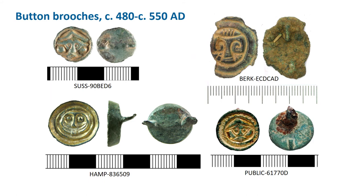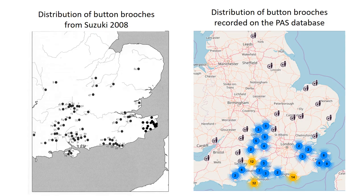Now we'll move on to button brooches. These are small cast brooches, generally about 20 millimetres in diameter, which nearly always have the same decoration of a rather angry-looking human face looking out at the observer. This is normally set within an upturned rim, though this often erodes away in the plough soil. They are always made from copper alloy and normally gilded; because they are small and chunky they tend to survive in reasonably good condition. They are mostly found in the south-eastern quarter of the country, south-east of Oxford, and there are also 11 known from northern France. Suzuki gives a date of around 480 to 550 AD.